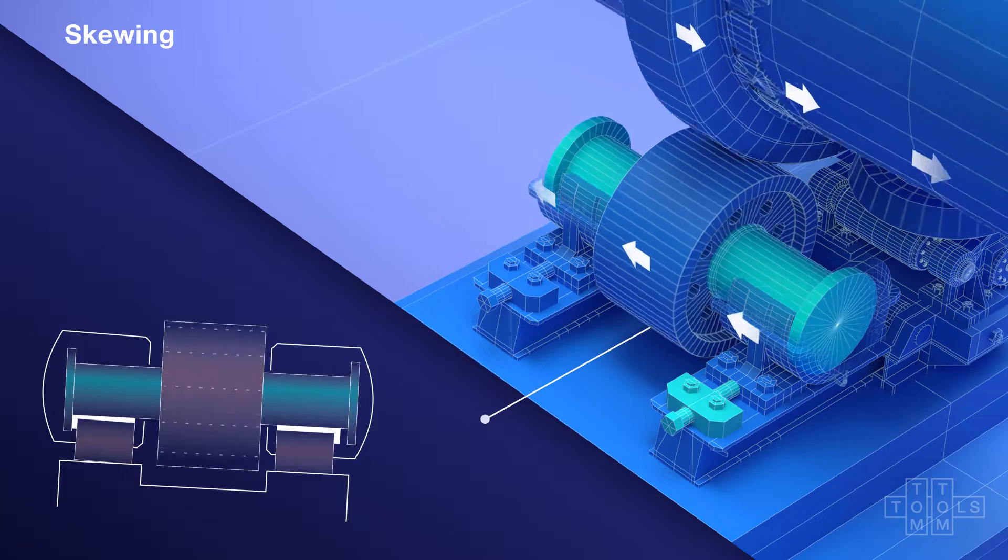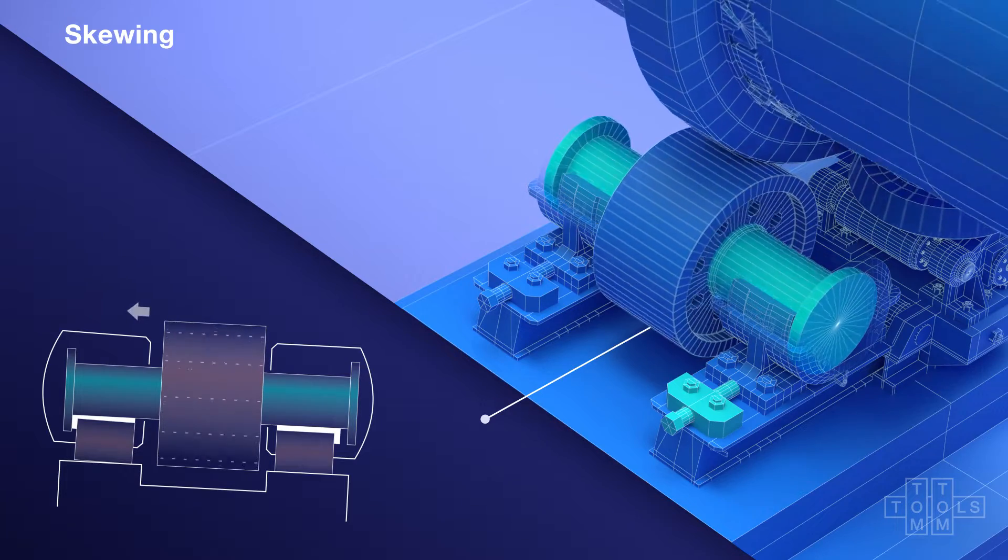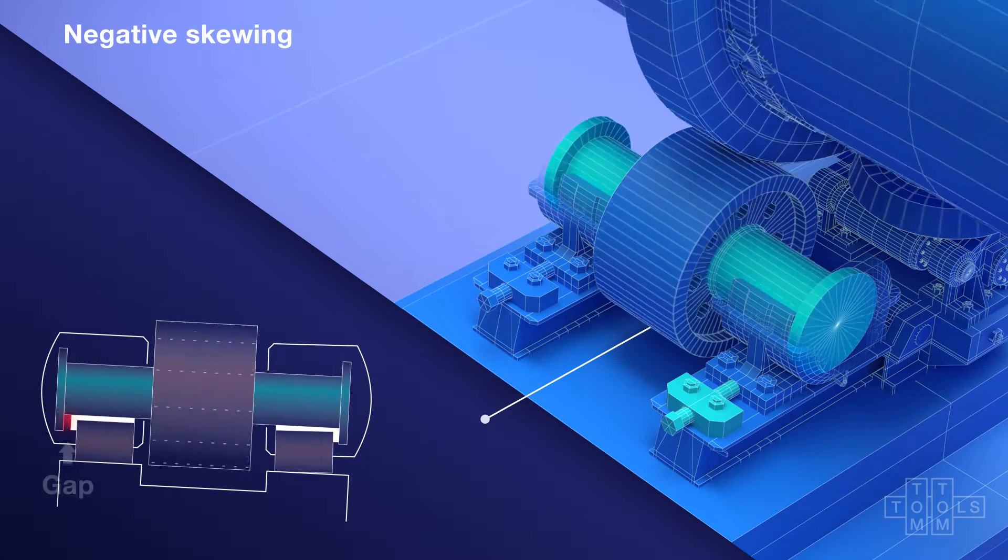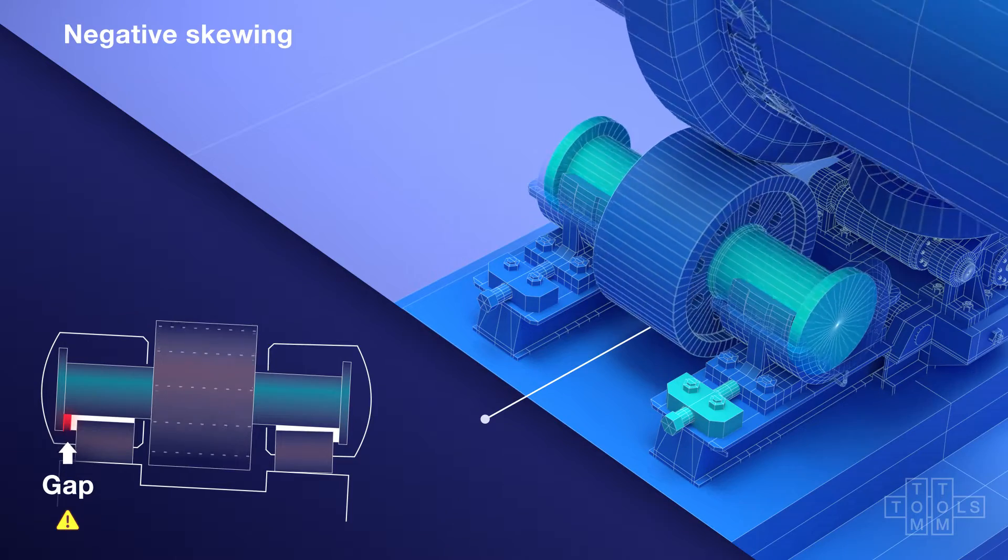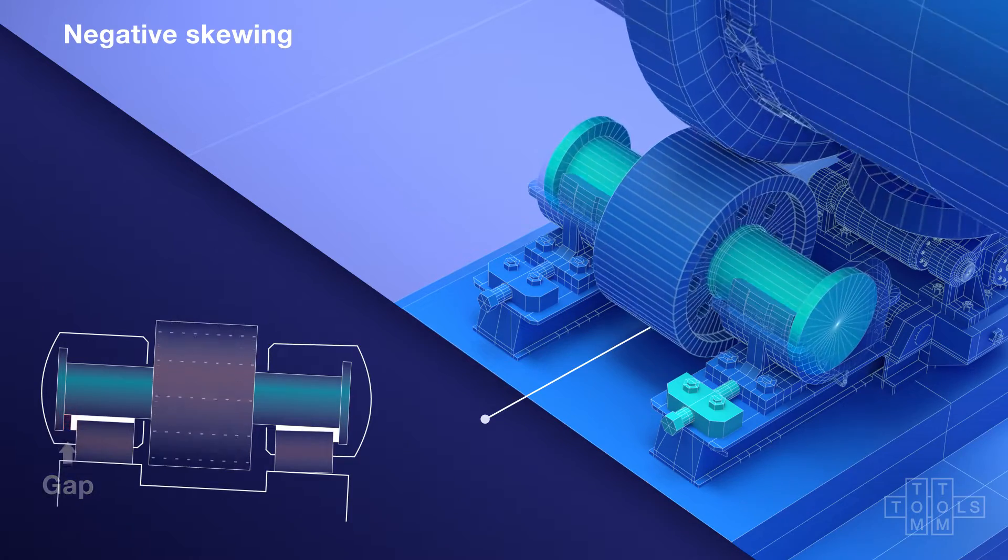A gap opens at the previously loaded thrust collar, relieving the upper bearing of any axial force.